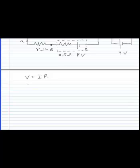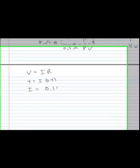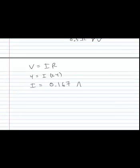And my voltage is 4 and my resistance is 24. And so my current is 0.167 amps.